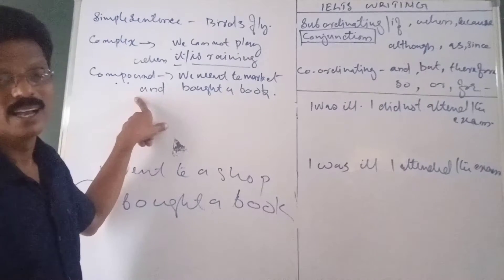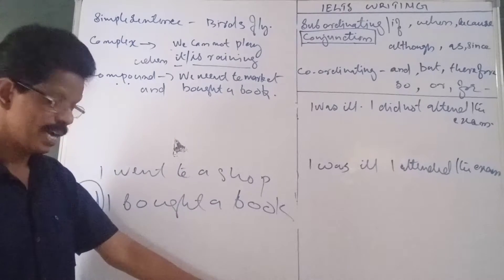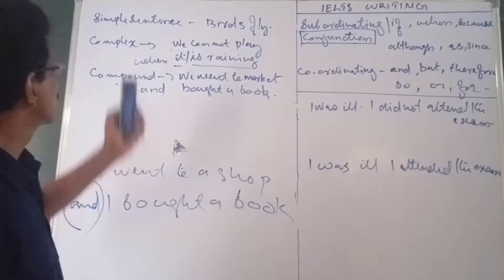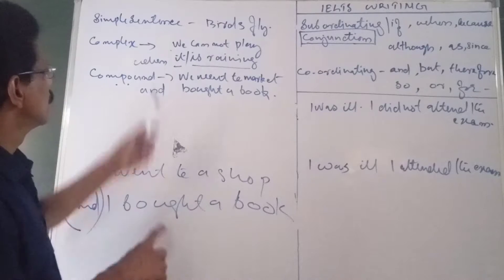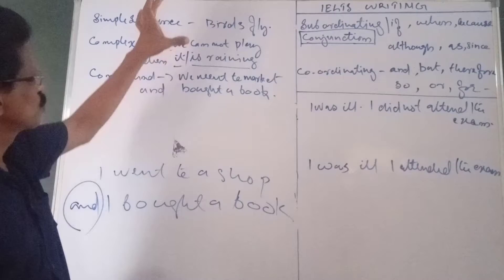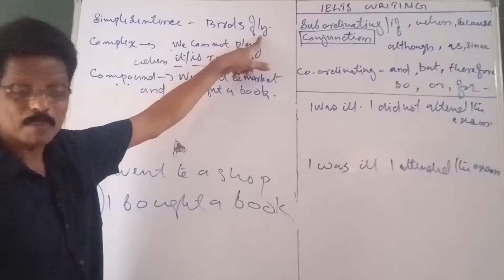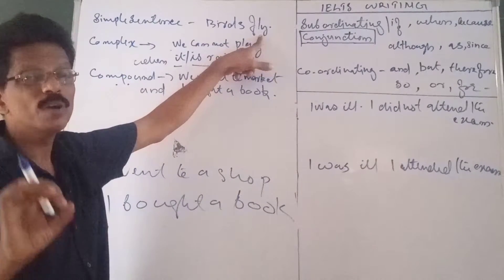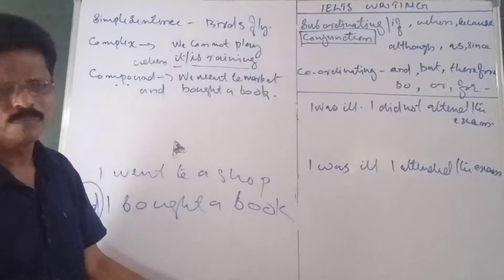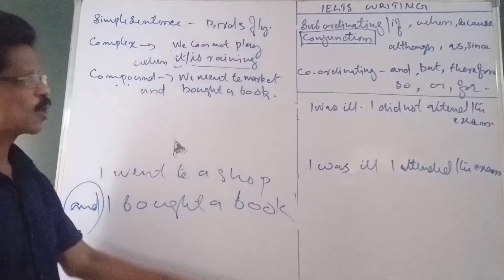Then, what is a simple sentence? A simple sentence is a sentence which has only one finite verb in it. For example, 'Birds fly' — it is a simple sentence, not because it has only two words, but because it has only one finite verb. A finite verb is a verb that has V1, V2, V3 forms — a regular verb. If there is only one such verb, it is known as a simple sentence.